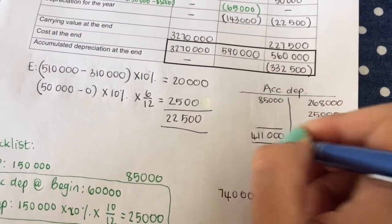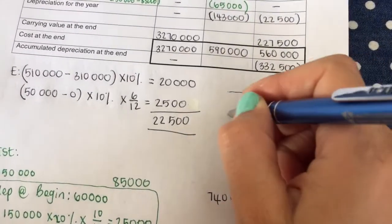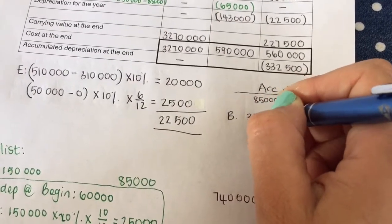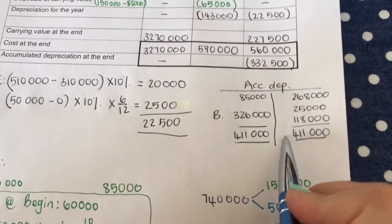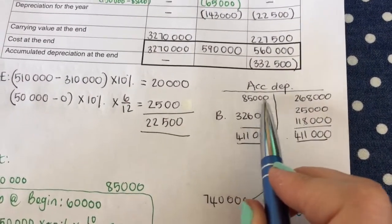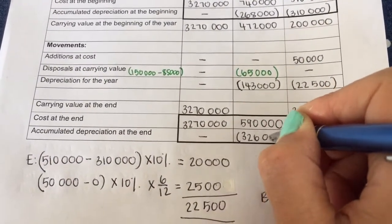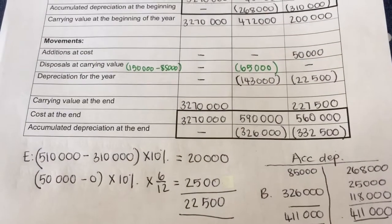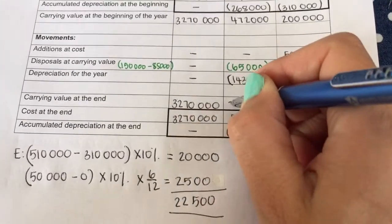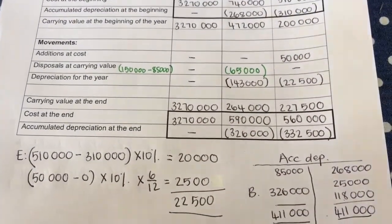Then I'm going to minus 85,000, and then I get my balance at the end of the year, 326. You don't have to draw this account, you do need to know what to add and what to subtract. So I'm going to put there 326 in a bracket. So 590 minus the 326 will give me the carrying value of my vehicles.